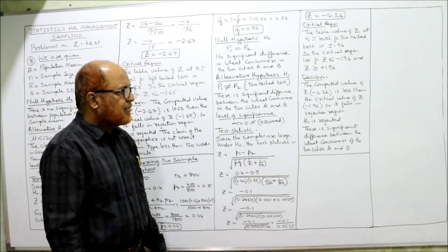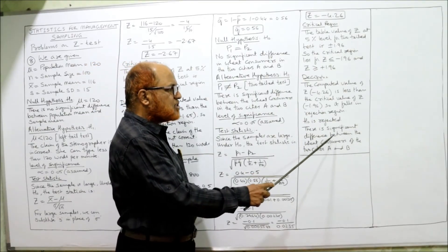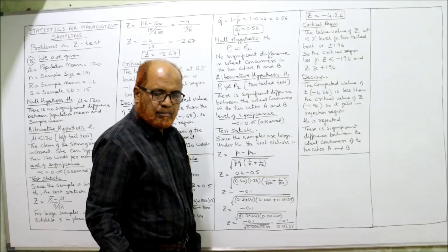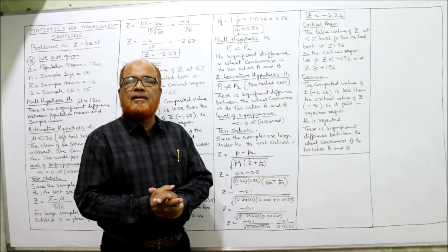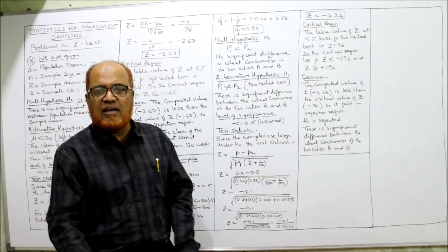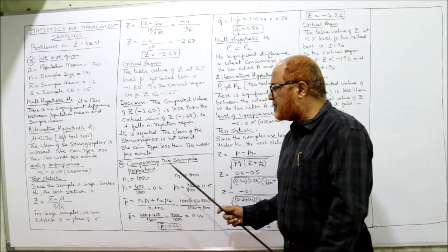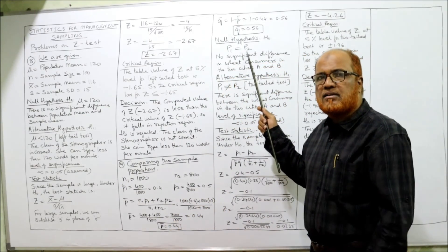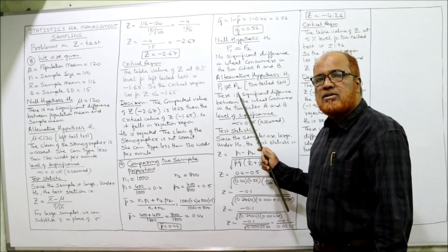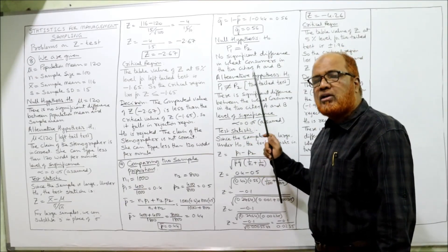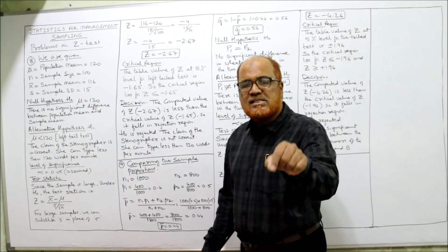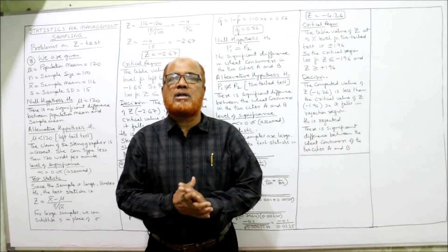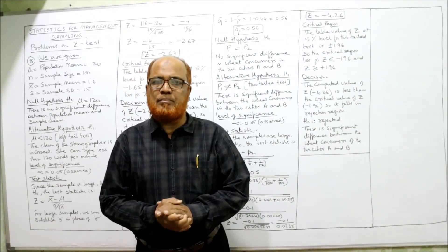The null hypothesis is rejected — there is significant difference between the wheat consumers of the two cities A and B. The null hypothesis P1 equal to P2 is rejected. The alternative hypothesis P1 not equal to P2 is accepted. There is significant difference in the wheat consumers in the two towns A and B.